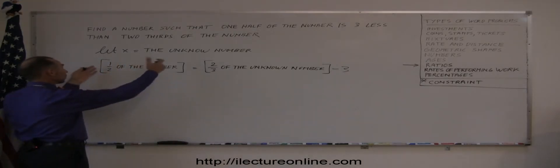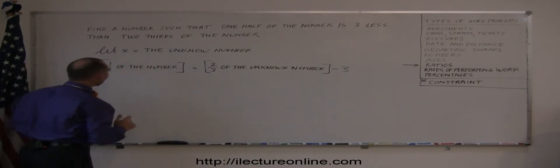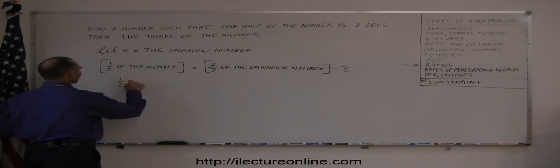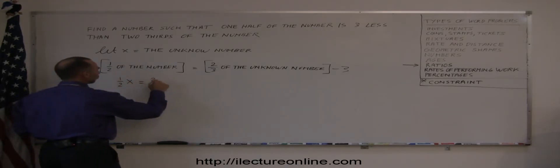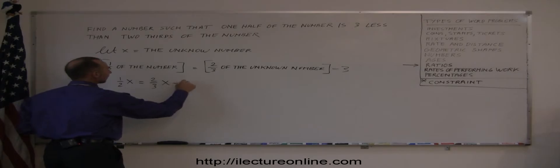Now we can simply substitute what the unknown number is. It's x, so we have one-half x equals two-thirds x minus three.